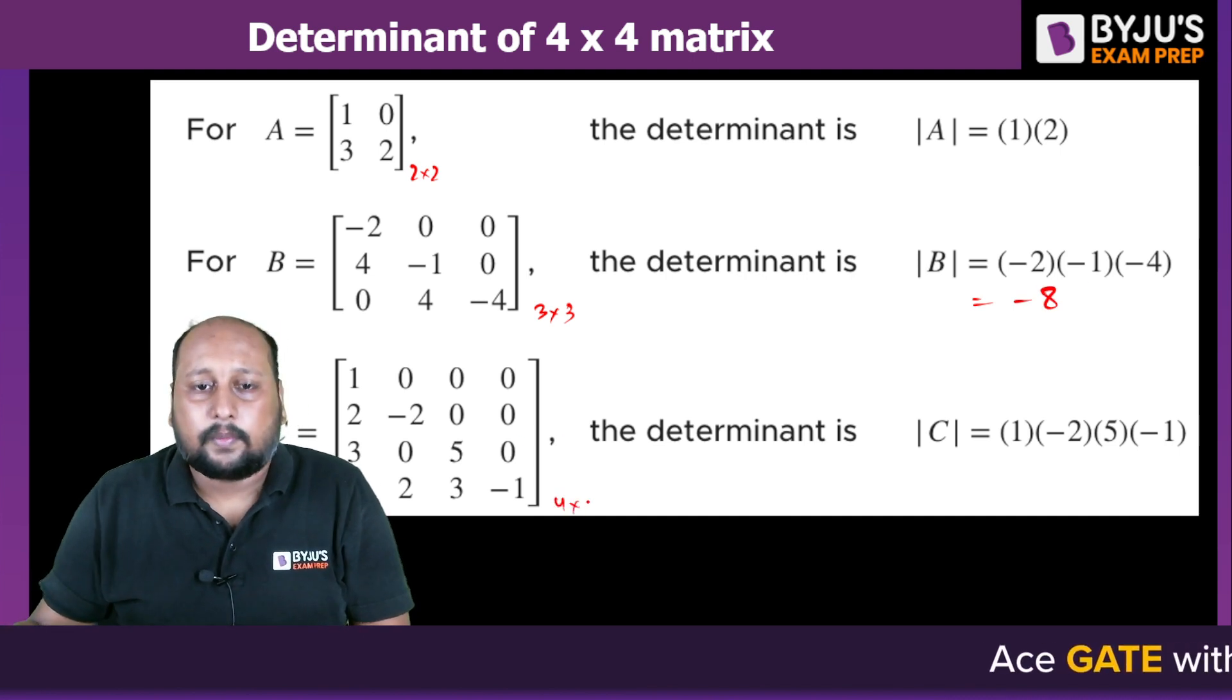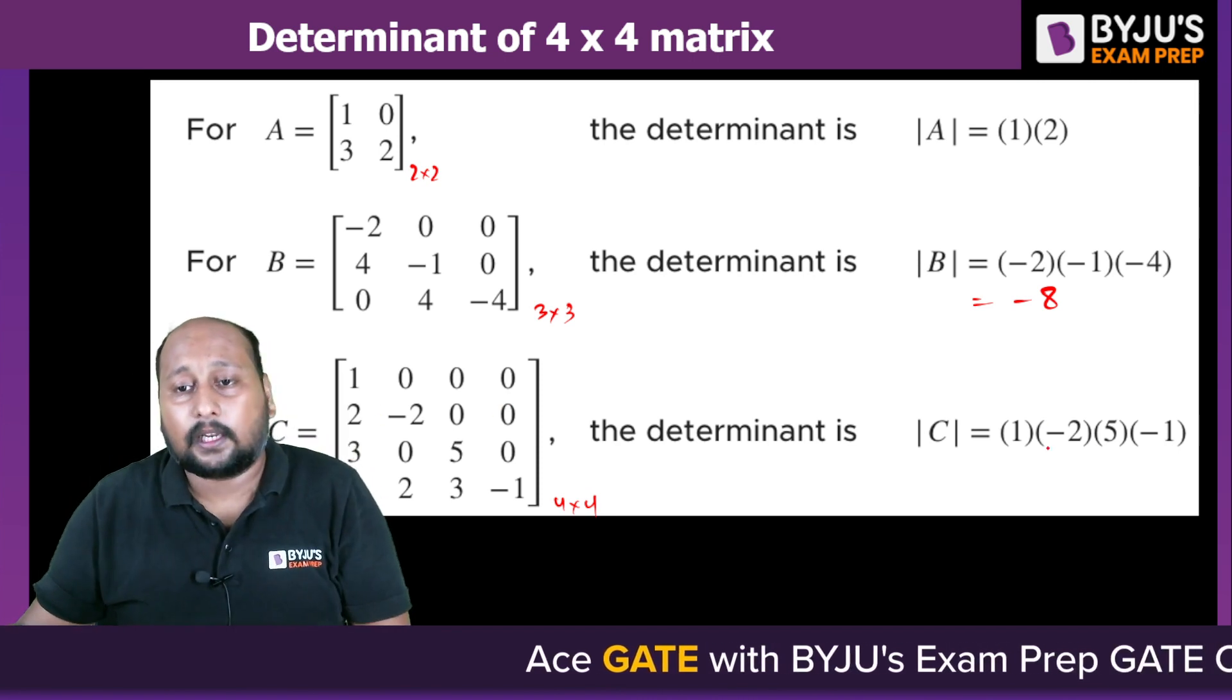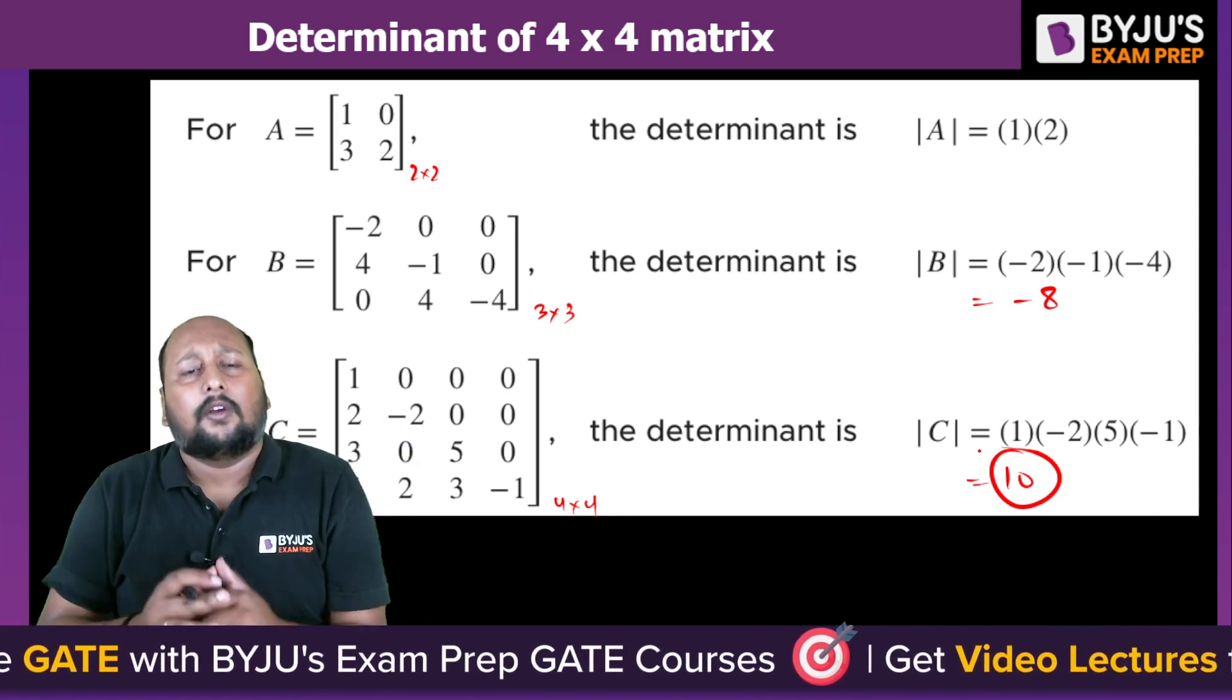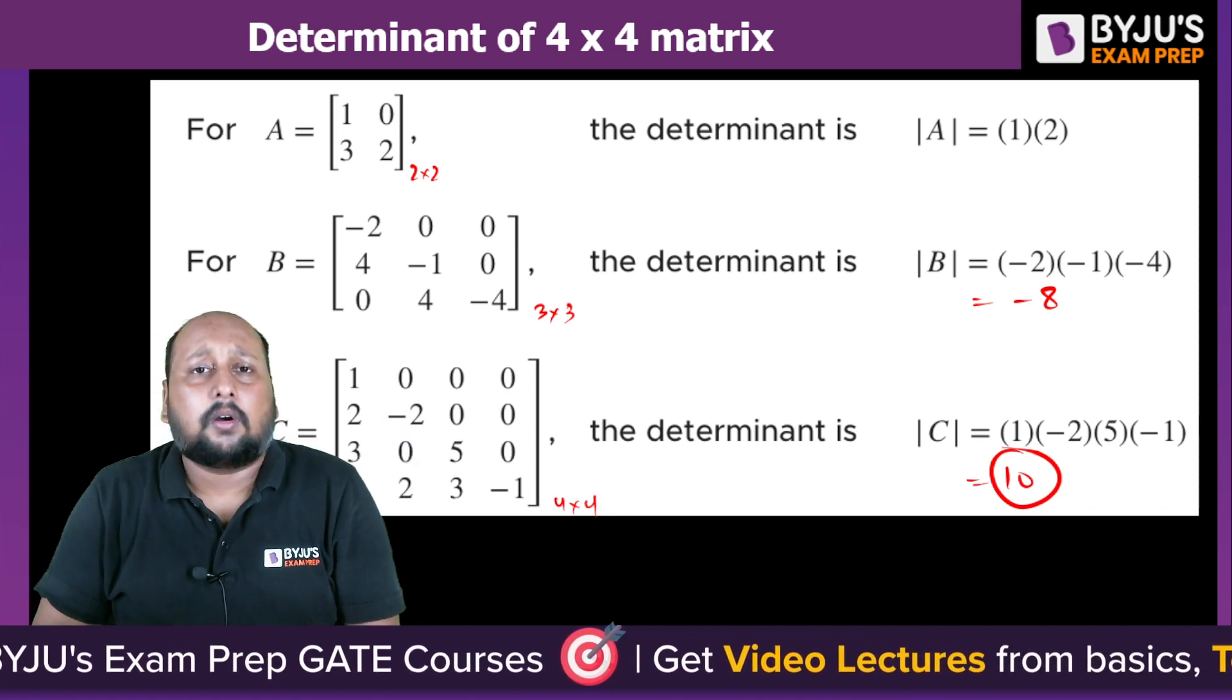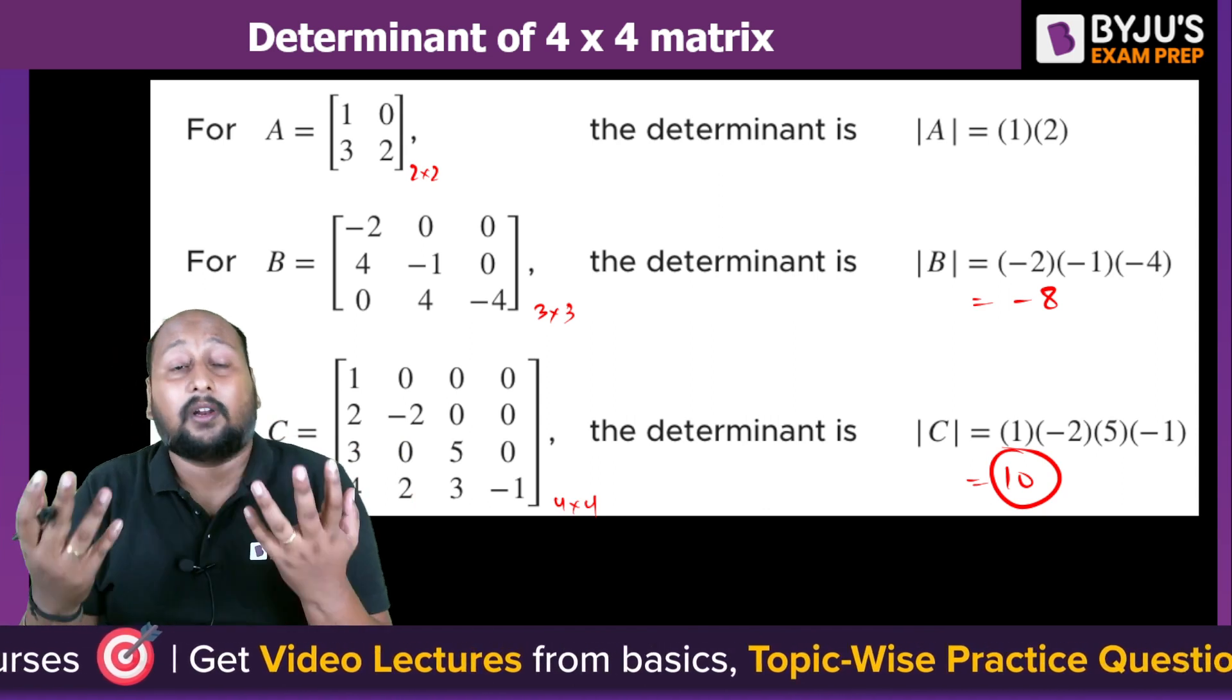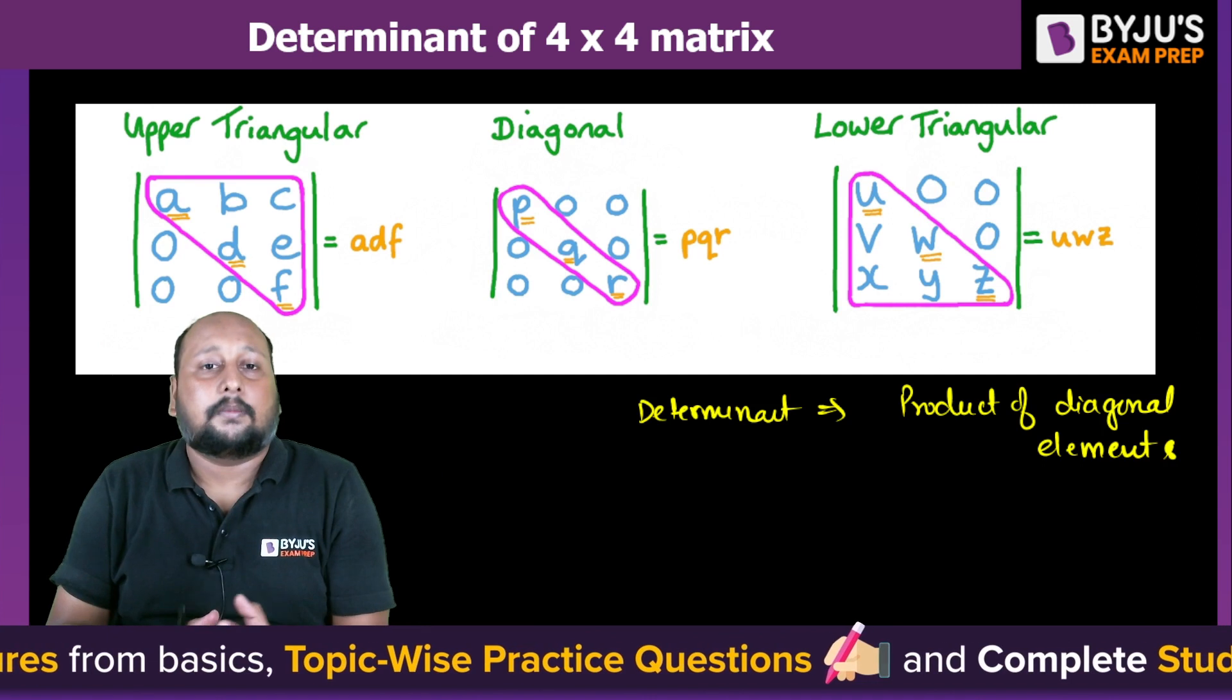If I talk about the 4 × 4 matrix here, the product of the diagonal elements is 1 × -2 × 5 × -1 that will be simply equal to 10. So very easily we are able to identify the determinant of any size of matrix, even if you're having 4 × 4 or even if you're having 5 × 5, you'll be able to calculate the determinant by simply having this very easy method.